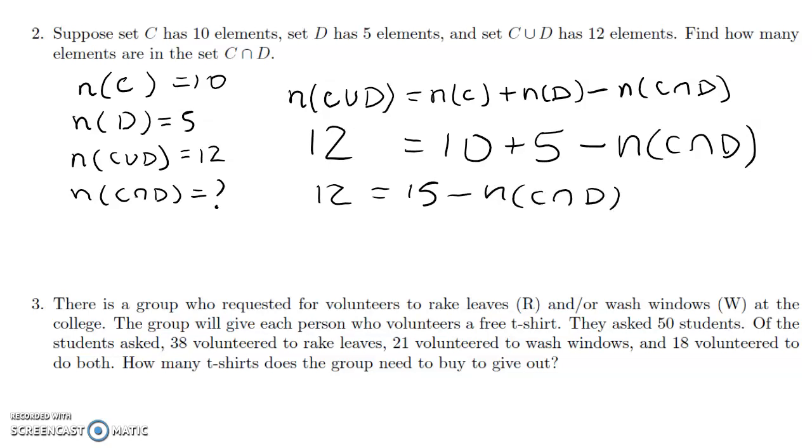So we can think about, what do you have to subtract from 15 to get 12? We see that the number in C intersect D would have to be 3. You have to take away 3 from 15 in order to get 12. So there must be 3 elements in the intersection.